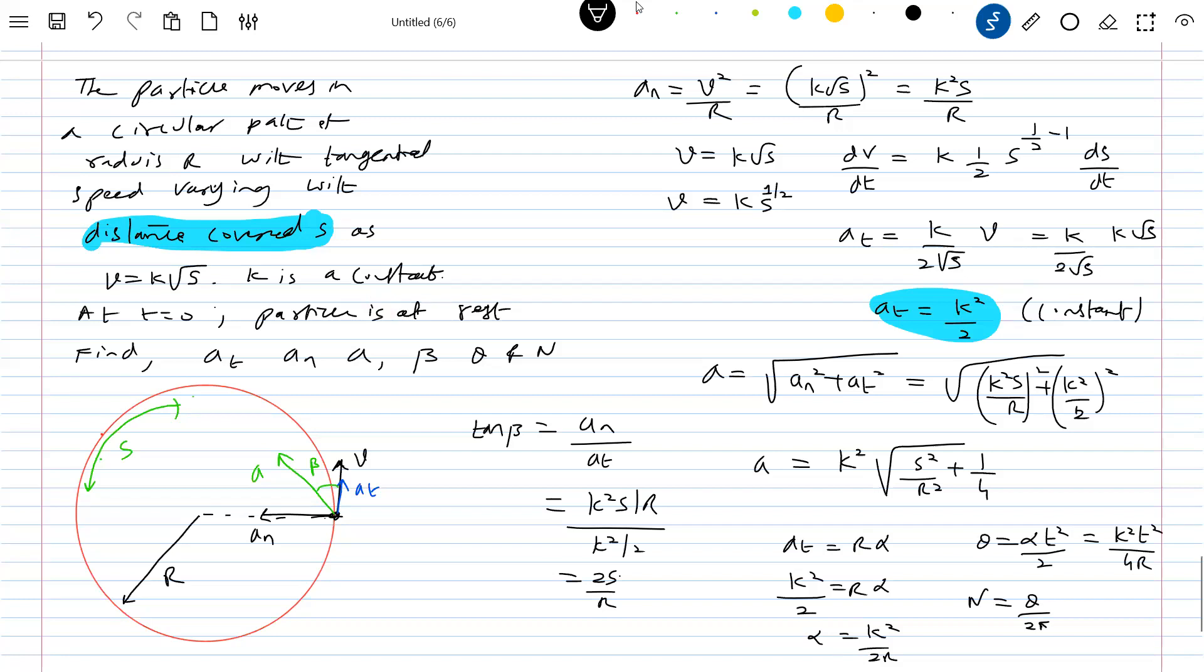So speed as a function of time, speed as a function of distance covered. Yes, we can manage it. It's all about the basic definitions and the integration. The calculus has to be applied properly. Nothing big. Already you have enough practice in the variable accelerated motion. That you should apply for circular motion.